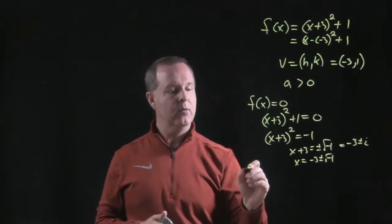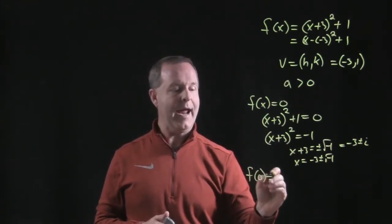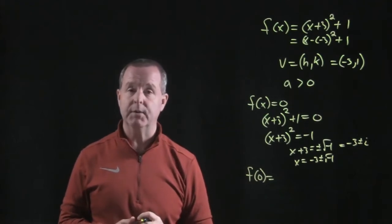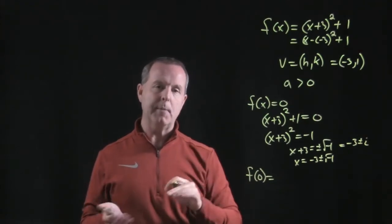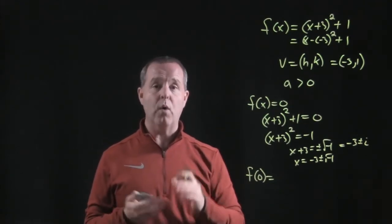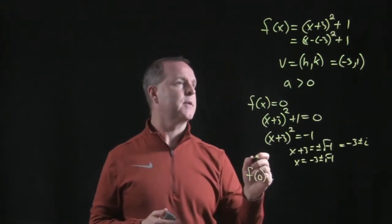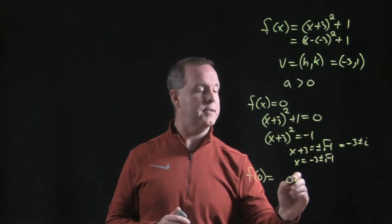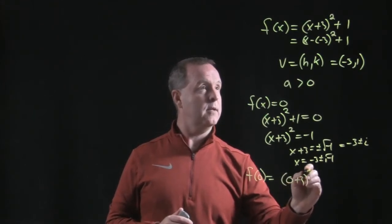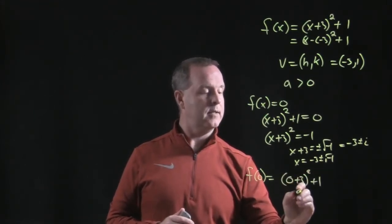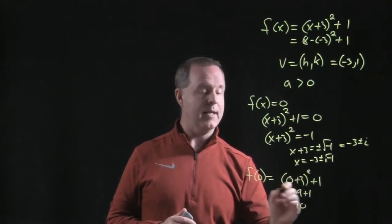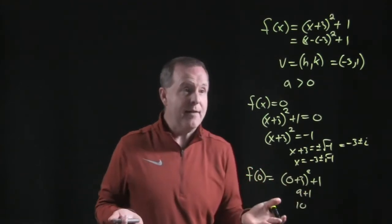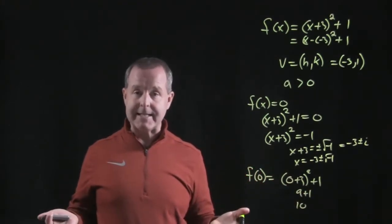And then lastly, we want to find out what happens when you evaluate this function at 0. When we do that, that helps us determine where it crosses the y-axis at. So to do that, we're going to set all the x's to 0, so it becomes 0 plus 3 squared plus a 1. 9 plus a 1 equals a 10. And now we have enough points to make a decent plot.